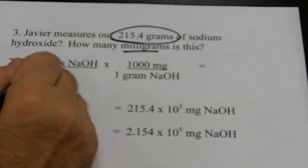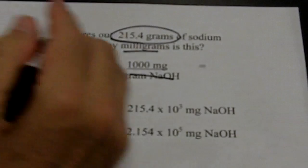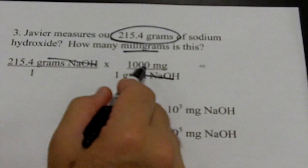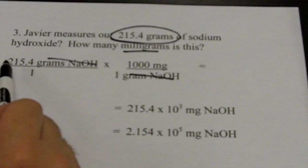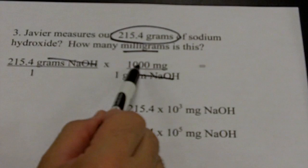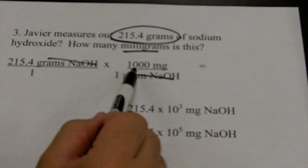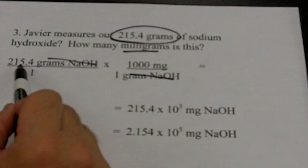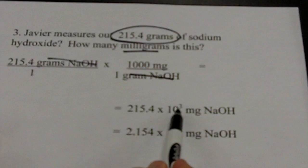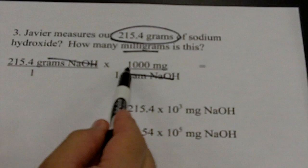A thousand milligrams in one gram. Now I cancel grams of sodium hydroxide with grams of sodium hydroxide, and what I have left is milligrams — the unit I'm looking for. Both are on top, so I'll multiply, but I don't really need a calculator. 215.4 grams times a thousand: a thousand is the same thing as 10³. So rather than using a calculator, I say 215.4 times 10³ milligrams of sodium hydroxide. That thousand is exact — I'm not limited by it in terms of significant digits.